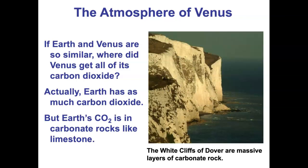Why are Earth and Venus so different if they're so similar in size and mass? The answer is that most of the carbon dioxide on Earth got locked up as rock — mostly in the form of carbonate rocks — whereas the CO2 didn't do that on Venus.